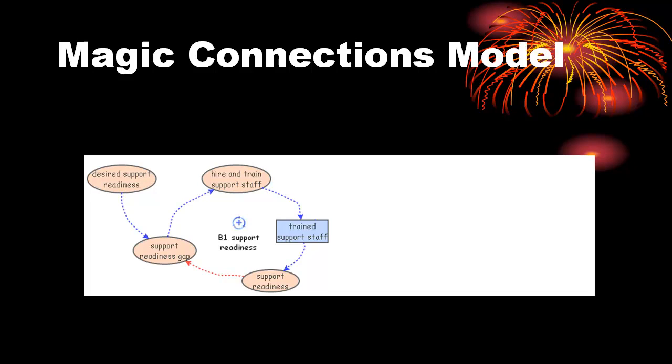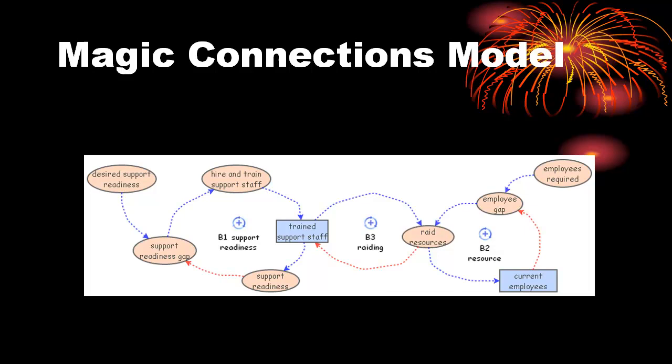Loop B2 indicates that as magic connections continues to grow, employees are needed throughout the organization. Loop B3 indicates that the rest of the organization fills part of its need by rating resources from support. This is a good example of why it is important to develop a systemic perspective of a situation rather than a system. It allows one to focus on what is relevant rather than modeling the entire business or organizational system.